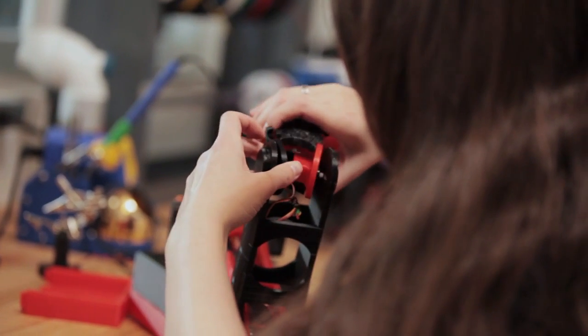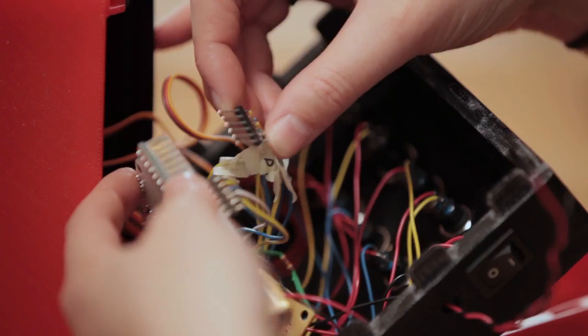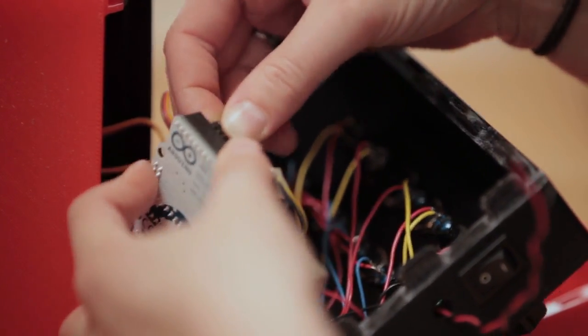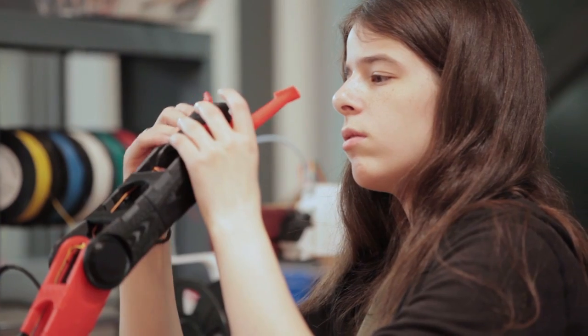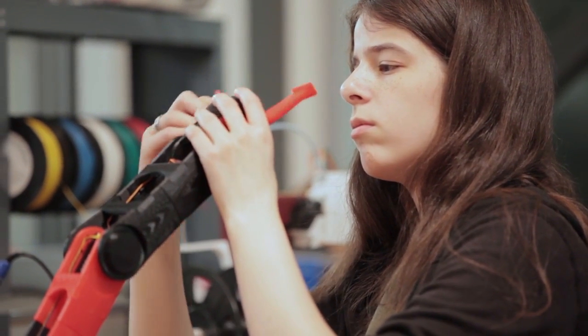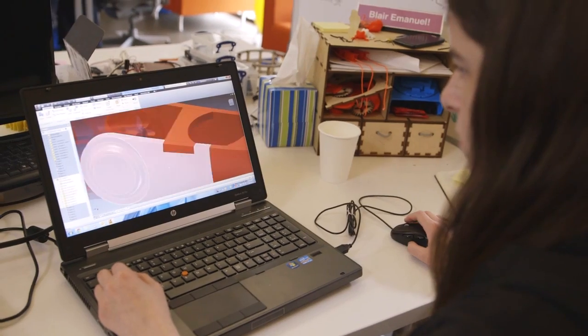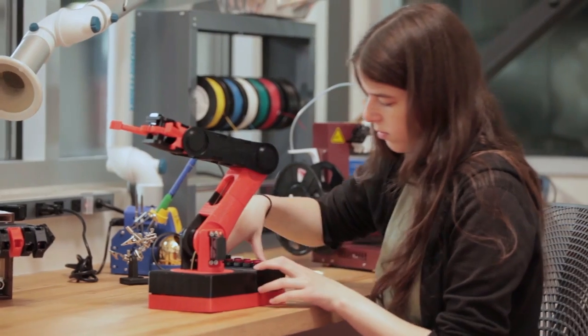Next, I assembled all those printed parts along with the electronics I had purchased and finally programmed the Arduino. The main challenge for this project was the physical design of the arm; however, the Affinia 3D printer does a good job with complicated geometries and made my job a lot easier.